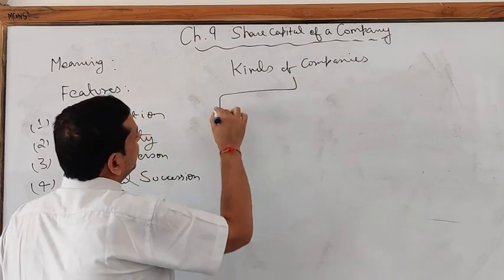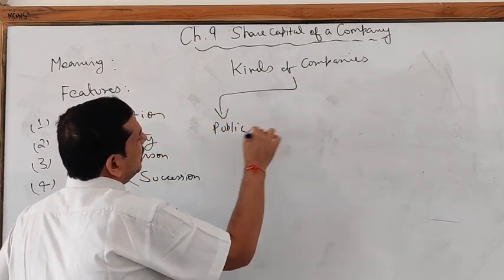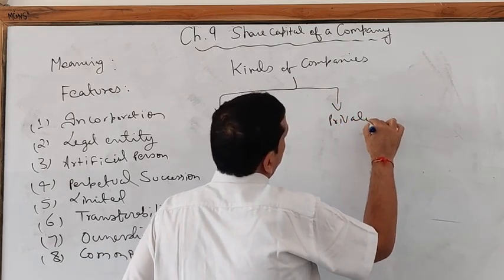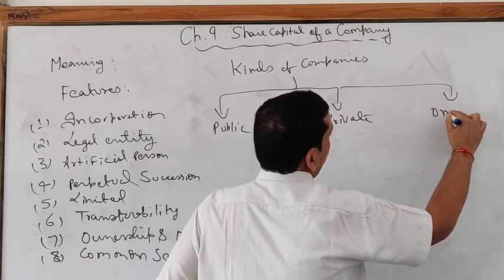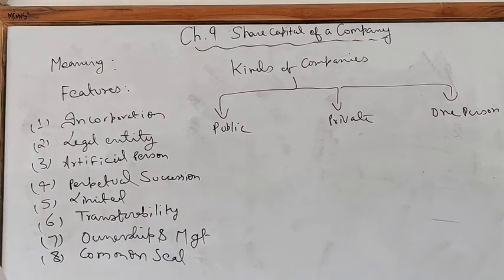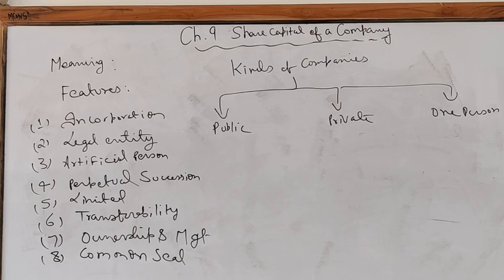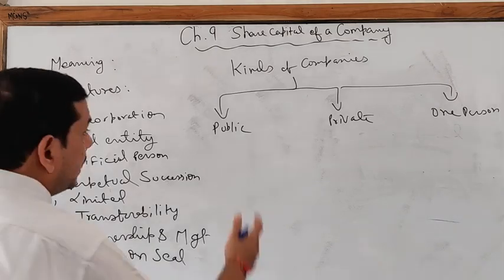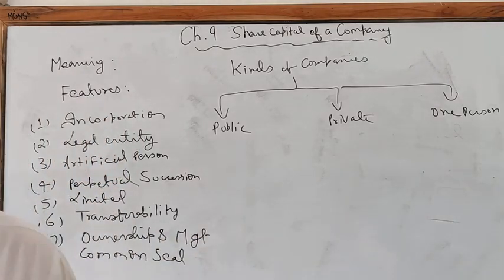Companies are broadly of two types: public and private. A third concept is one person company, a new concept incorporated in the year 2013. Only a natural person being an Indian citizen can form a one person company. It cannot be formed for charitable purposes or non-banking activities. Its paid-up share capital is not more than 50 lakh and average annual turnover of three years shall not exceed 2 crores.